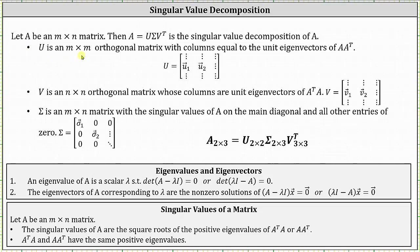U is an M by M orthogonal matrix with columns equal to the unit eigenvectors of A times A transpose. V is an N by N orthogonal matrix whose columns are unit eigenvectors of A transpose times A — remember we're looking for V transpose for the singular value decomposition. Sigma is an M by N matrix with the singular values of matrix A on the main diagonal and all other entries zero.